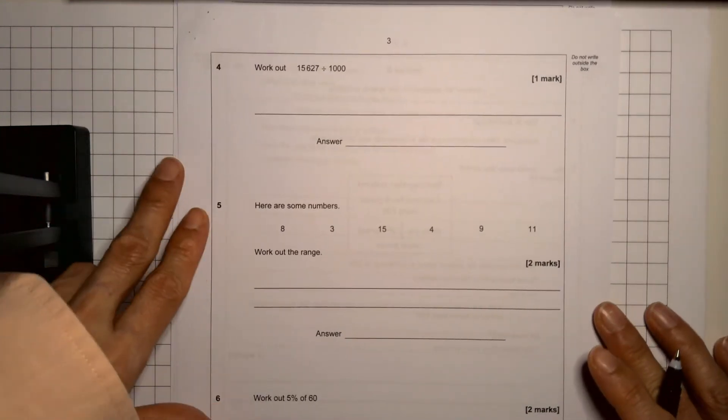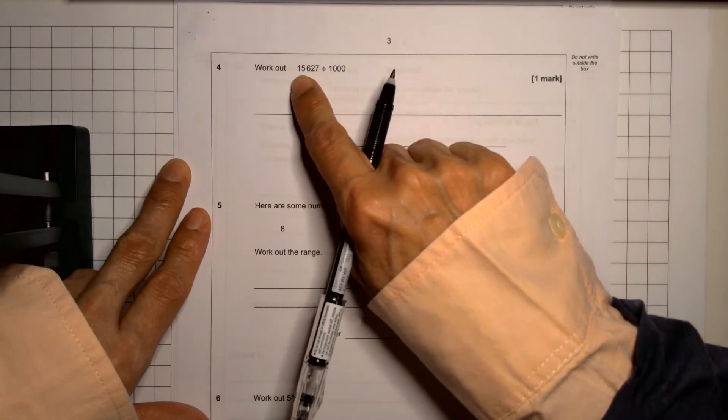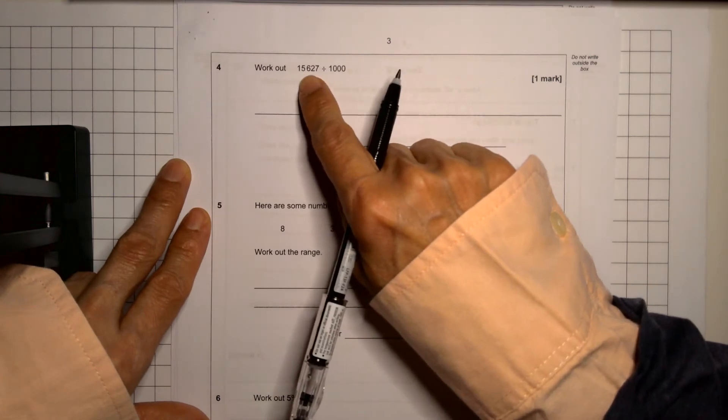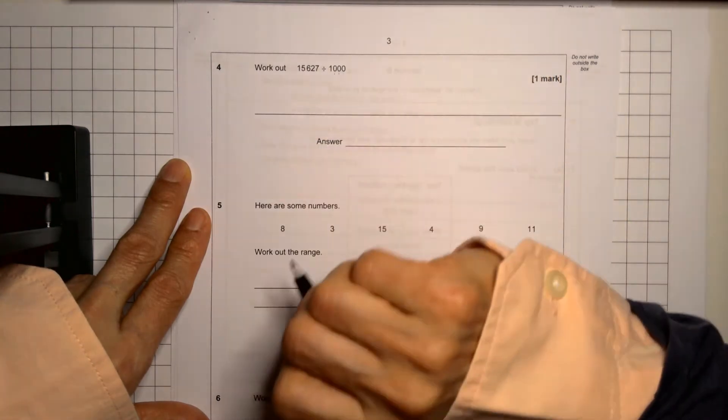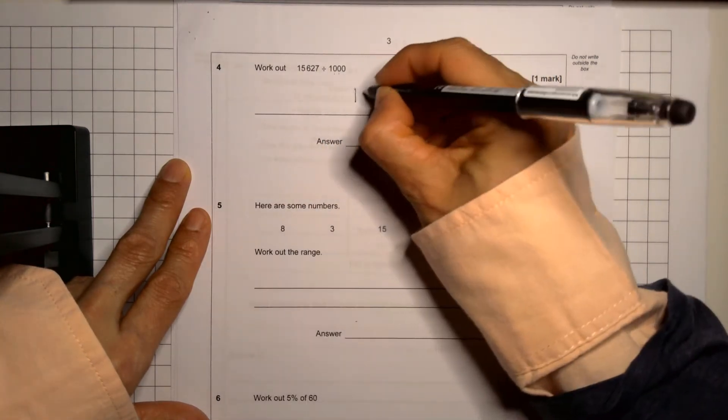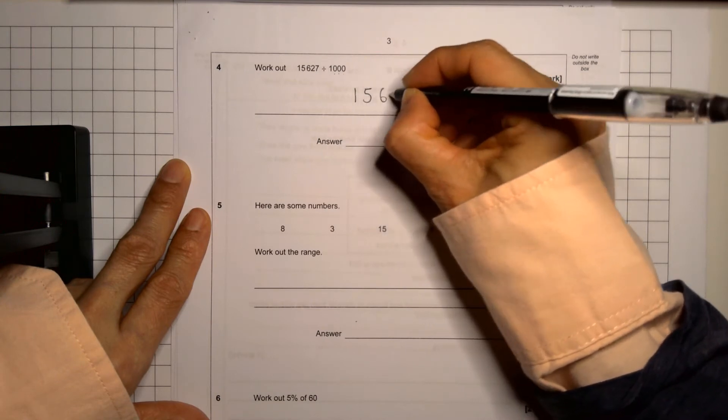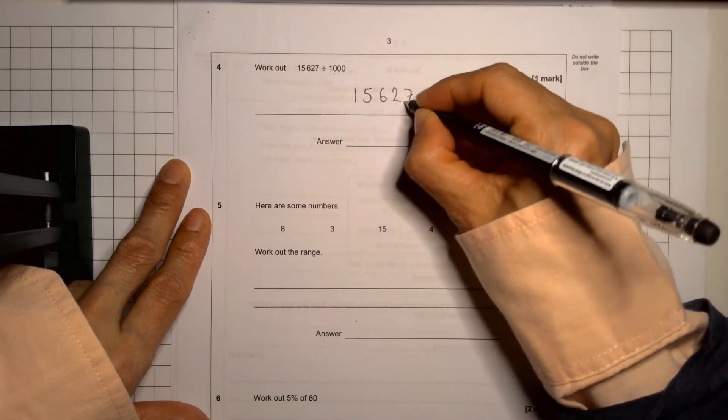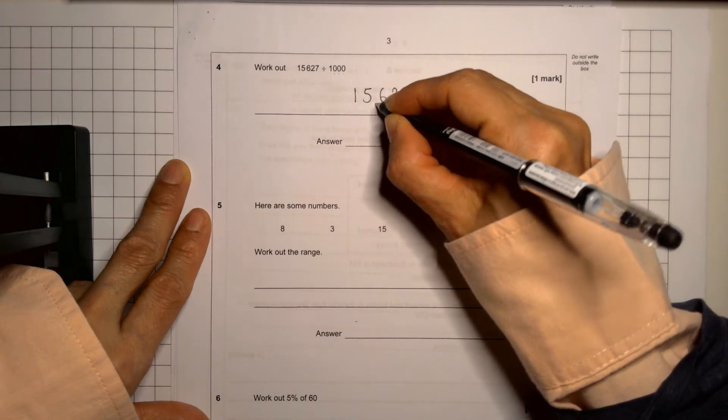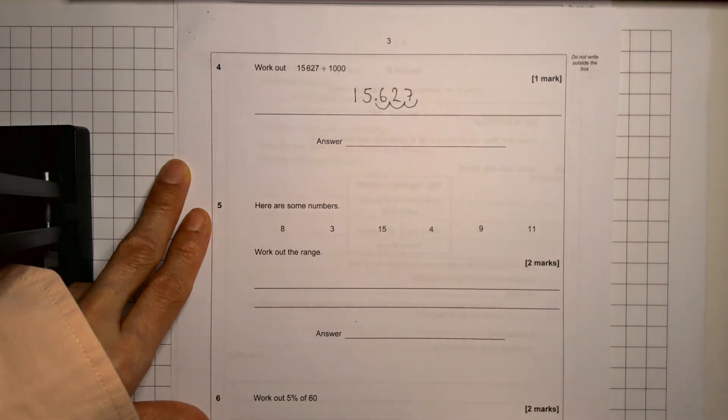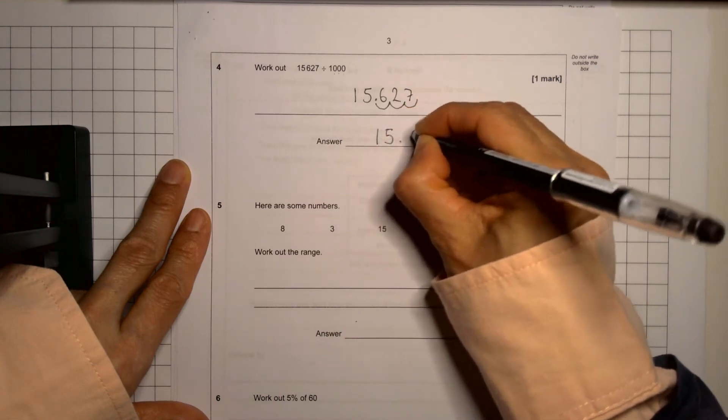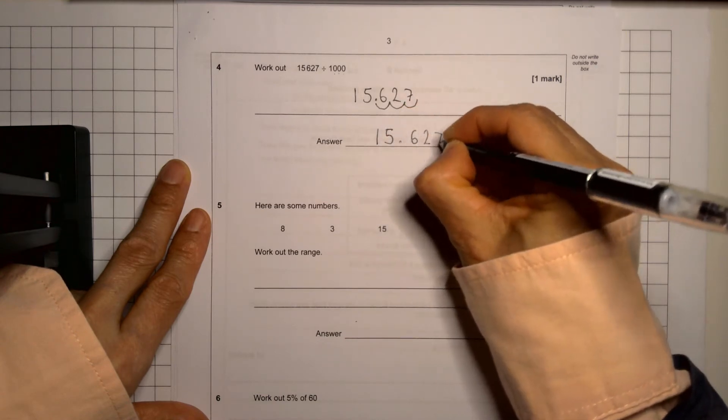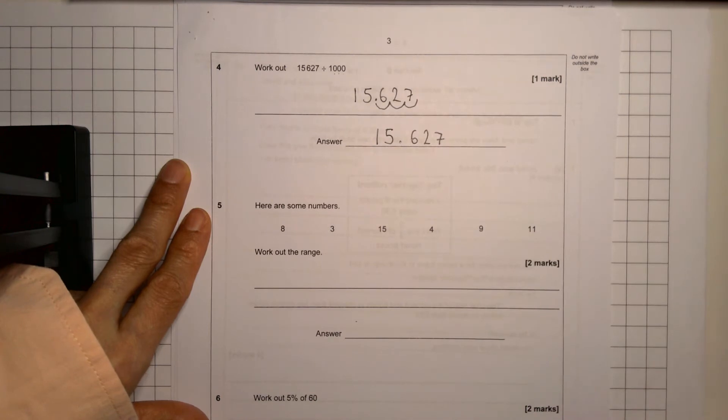Question number four is a calculation. It tells us that we have 15,627 divided by a thousand. Now notice a thousand has three zeros. So I'm going to take my 15,627 divided by 10 divided by 100 divided by 1000. So I'm going to end up with a decimal dot between the 5 and 6. So the answer is 15.627. One mark.